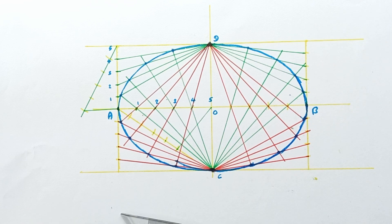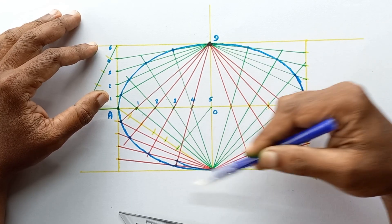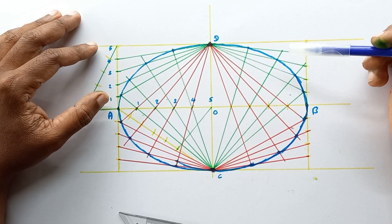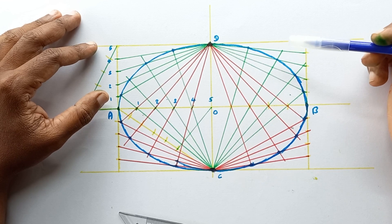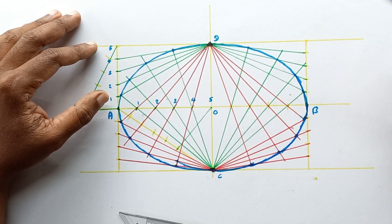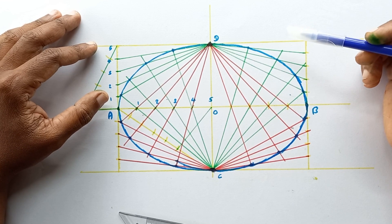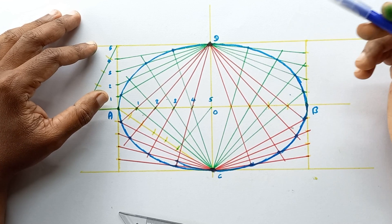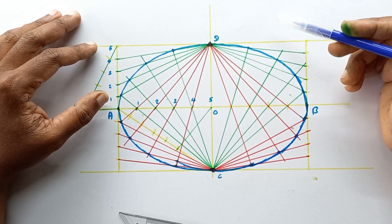This is the completed ellipse. This is how we construct an ellipse using the rectangle method. Thank you, see you next time.